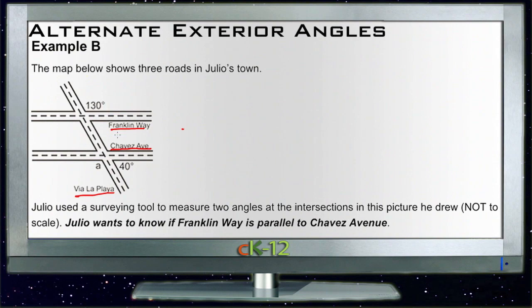So we need to find out whether this line here is parallel to this line here, and we can do that with the converse of our alternate exterior angles theorem.